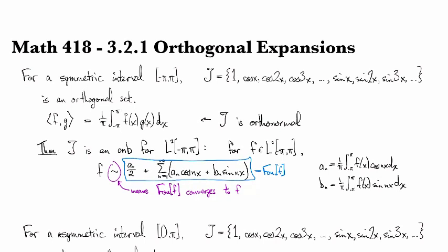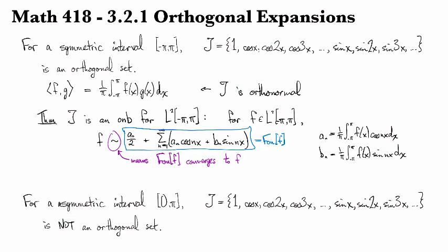If we now look at the asymmetric interval from 0 to pi, then we find out that this is no longer quite the same. T, for instance, the same set before, is not an orthogonal set on this asymmetric interval from 0 to pi.